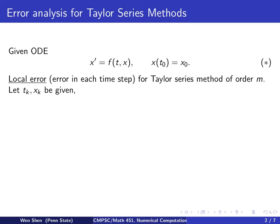We now do some error analysis for Taylor series method. So we can go back to the problem setting. Given ODE x' = f(t,x) with the initial condition at t₀ and x₀, we first would like to understand the local error, and that is the error in each time step for Taylor series method of order m.